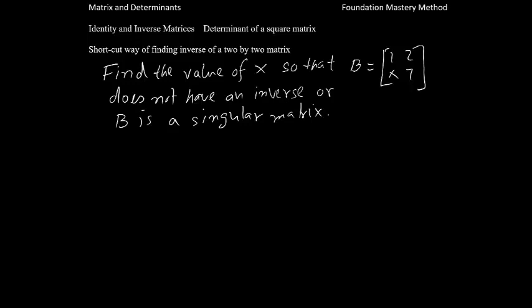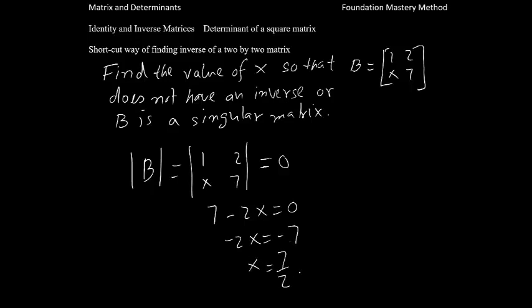Let us solve a simple question. Suppose that you are given a matrix B with entries 1, 2, x, 7. Now, we need to find x so that this matrix doesn't have inverse or it is a singular matrix. So what do we do? We find the determinant of B. So determinant of B will be like this, 1, 2, x, 7. So when you multiply cross, you can get, and it should be 0. If it is 0, that means B is a singular matrix. Now multiply this way, you get 7 minus 2x is 0. Then you can solve for x, you get negative 2x is negative 7, then x will be 7 over 2.